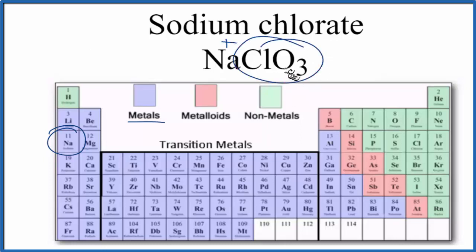The chlorate ion, this whole thing, is a polyatomic ion with a charge of one minus. You can see the positive sodium ion and the negative chlorate ion are opposites and they're attracted. Those two ions then form the ionic bond.